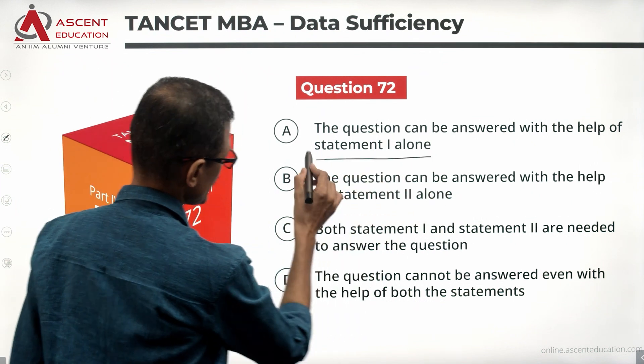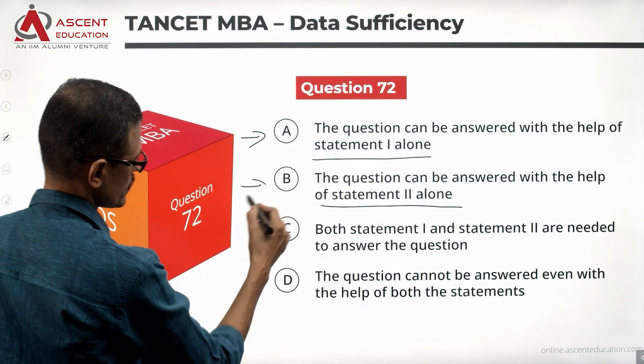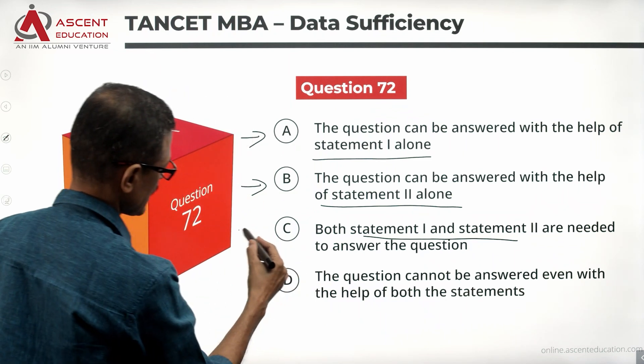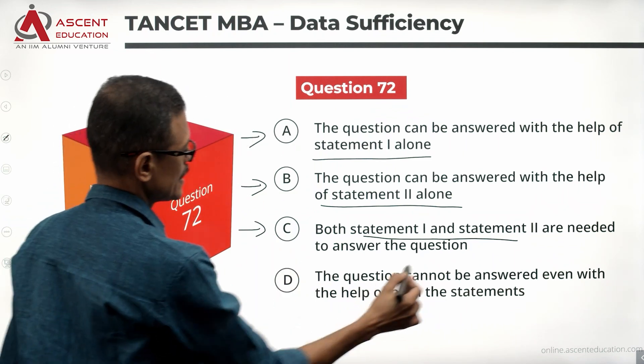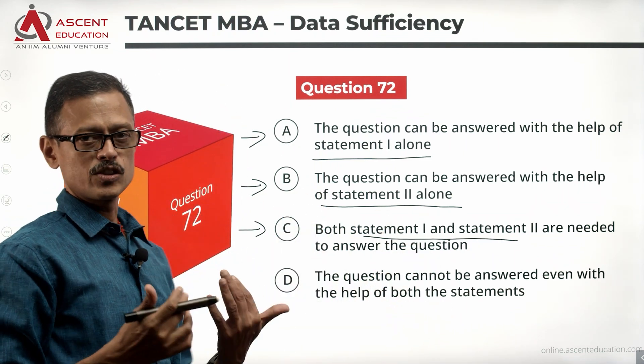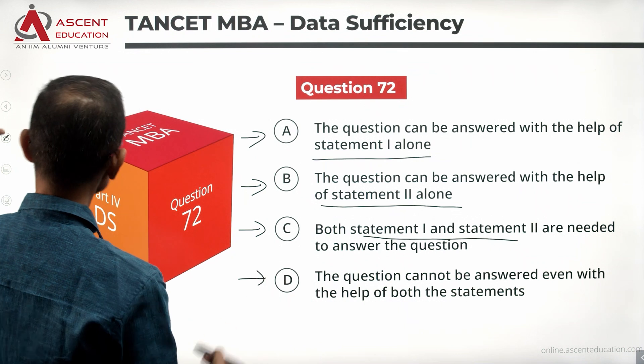The answer options are: Statement 1 alone is sufficient — answer option A. Statement 2 alone is sufficient — answer option B. Together sufficient — answer option C. Both statements together are still not sufficient — answer option D.